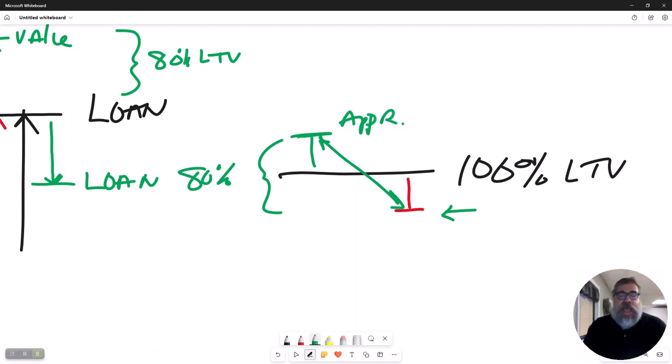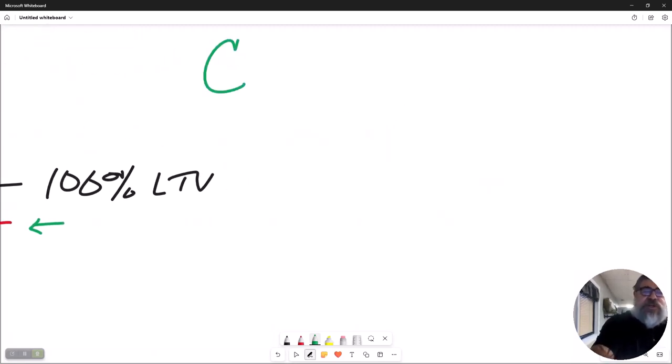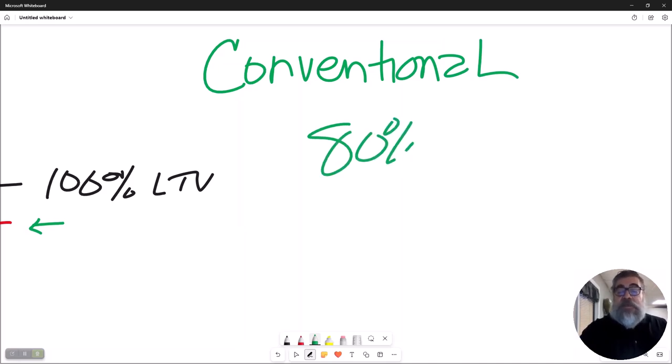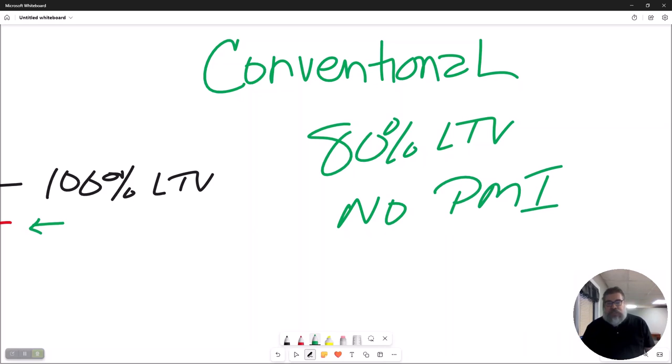And once that happens, that 80% will be generated and PMI goes off. So when you hear the term conventional loan, what you should think, that's not right, conventional is an 80% loan to value, no PMI. That is the definition when most mortgage loan originators, most lenders talk about a conventional loan as being an 80% loan to value, no PMI.